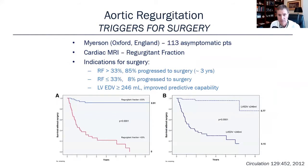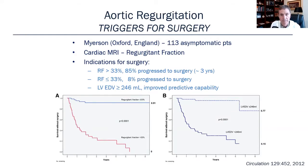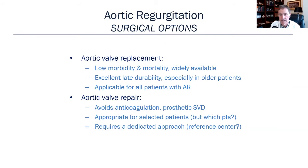A patient with moderate aortic regurgitation undergoing another cardiac surgery is also a candidate. There was an excellent study from Oxford looking at cardiac MRI and predicting which patients would need surgery. If the regurgitation fraction was over 33%, then 85% of those patients progressed to surgery within three years or became symptomatic. Left ventricular end-diastolic volume greater than 246 milliliters also improved the predictive capability. Aortic valve replacement classically offers low morbidity and mortality and excellent late durability, especially in older patients. Aortic valve repair allows you to avoid anticoagulation and is appropriate for selected patients, but requires a dedicated approach.